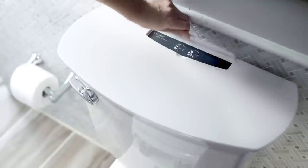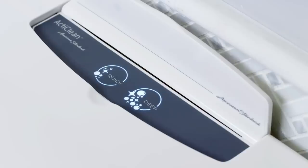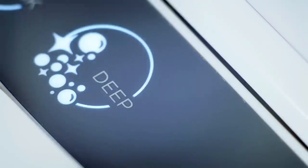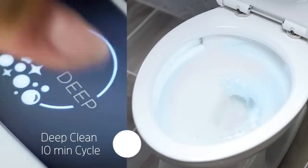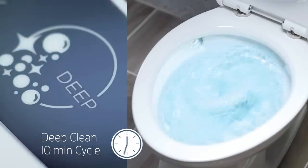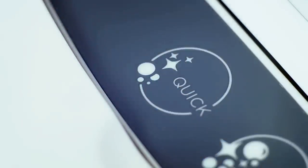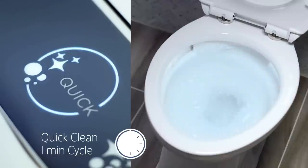The ActiClean system includes two cleaning cycles: deep clean and quick clean. The deep clean cycle is a 10-minute cycle that thoroughly cleans the inside of the toilet bowl. The quick clean cycle is a one-minute cycle used for regular upkeep between deep cleanings.